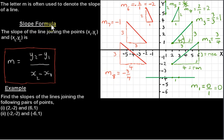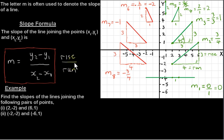Let's look at the slope formula. The slope of the line joining the points (X1, Y1) and (X2, Y2) is Y2 minus Y1 over X2 minus X1. As I explained, Y2 minus Y1 is the vertical distance between the two points — sometimes called the rise. X2 minus X1 is the horizontal distance between the points, called the run. So when we subtract the Y values, we get the vertical distance, and when we subtract the X values, we get the horizontal distance.